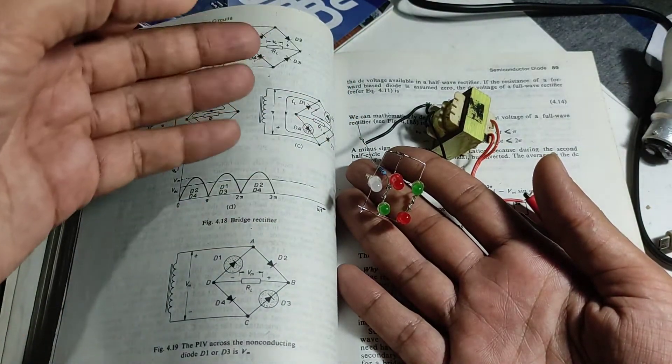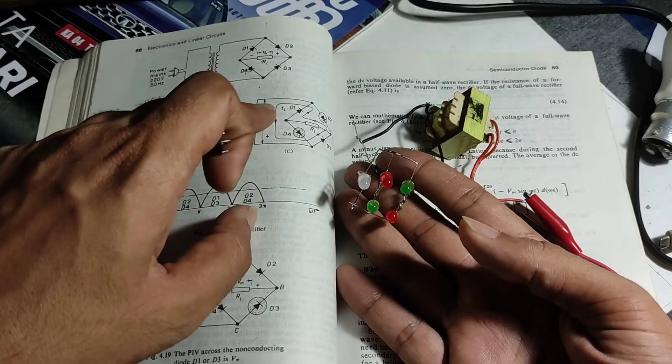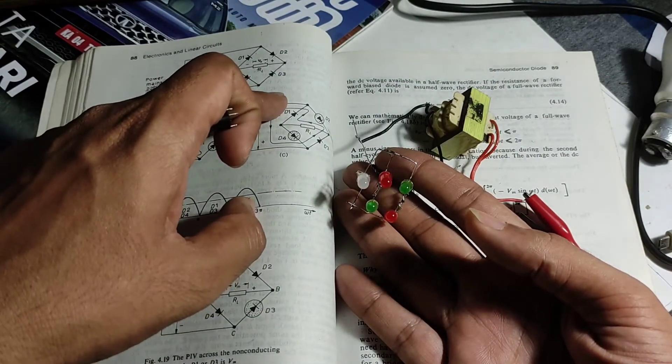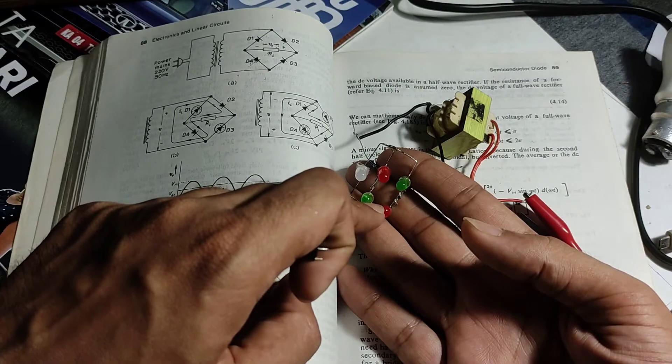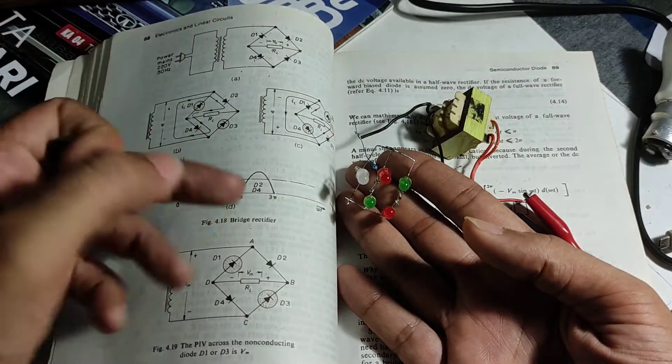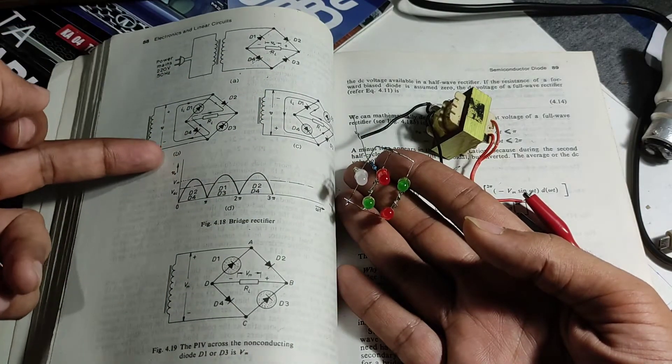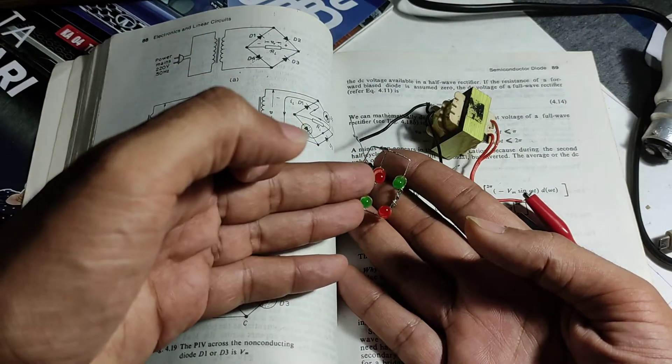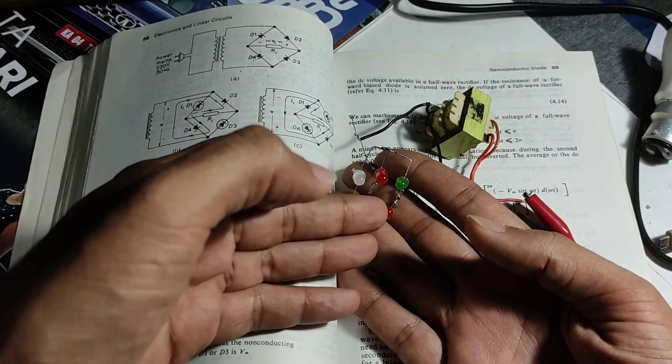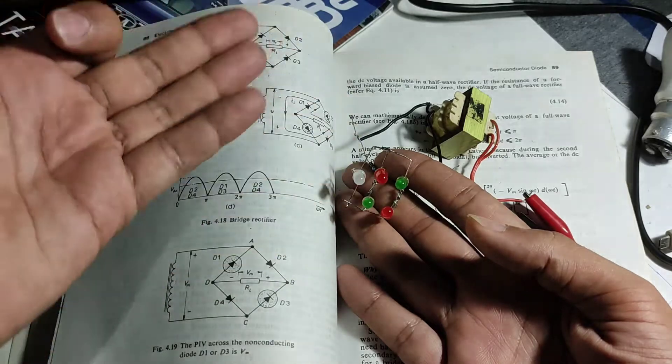So this is going to function exactly like this. When the positive peak is on this side, two of the diodes are going to conduct because these are also diodes. When the other side is positive, the first two pairs are going to be turned off and the remaining two pairs are going to turn on. Of course, you are going to see that happening.